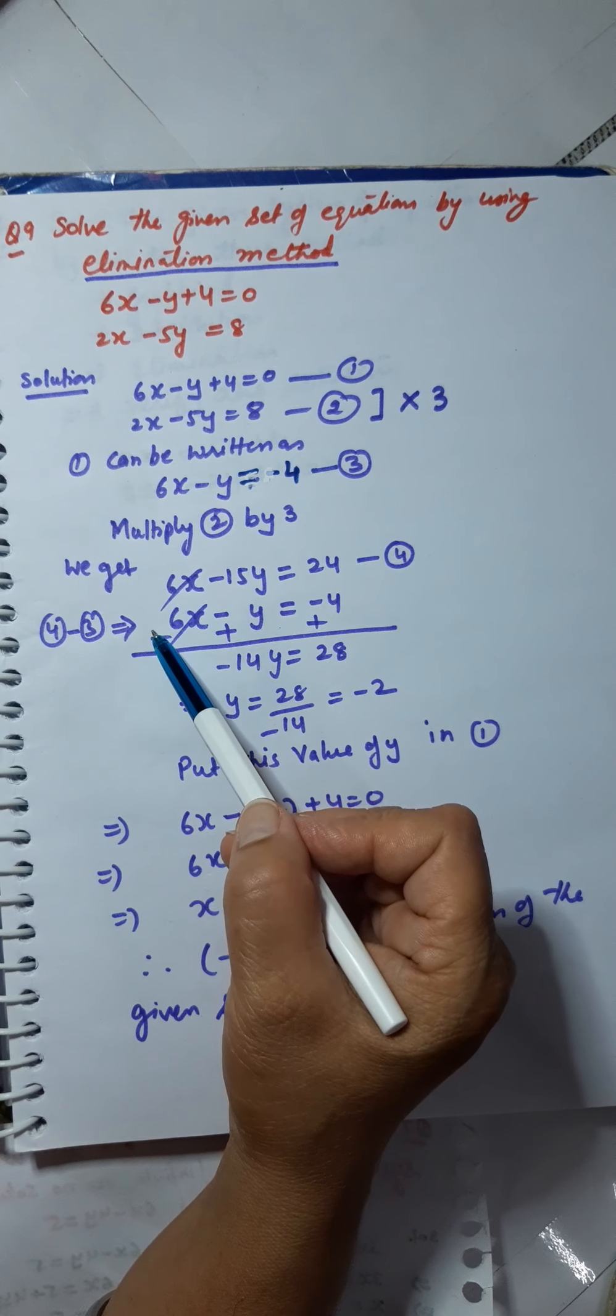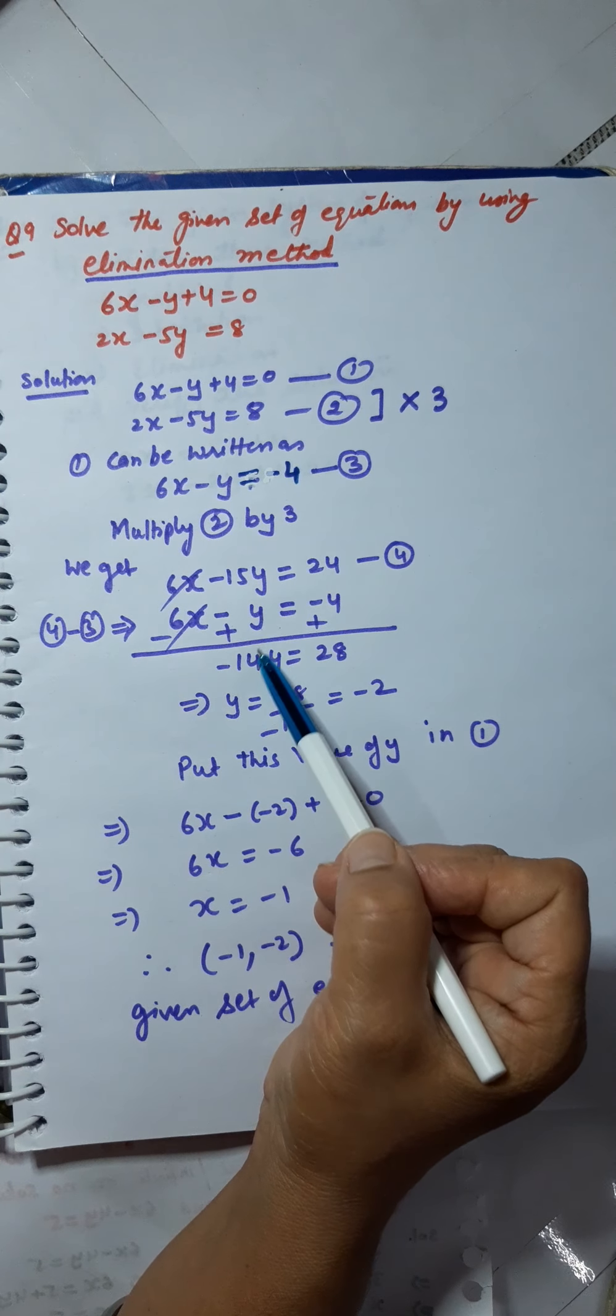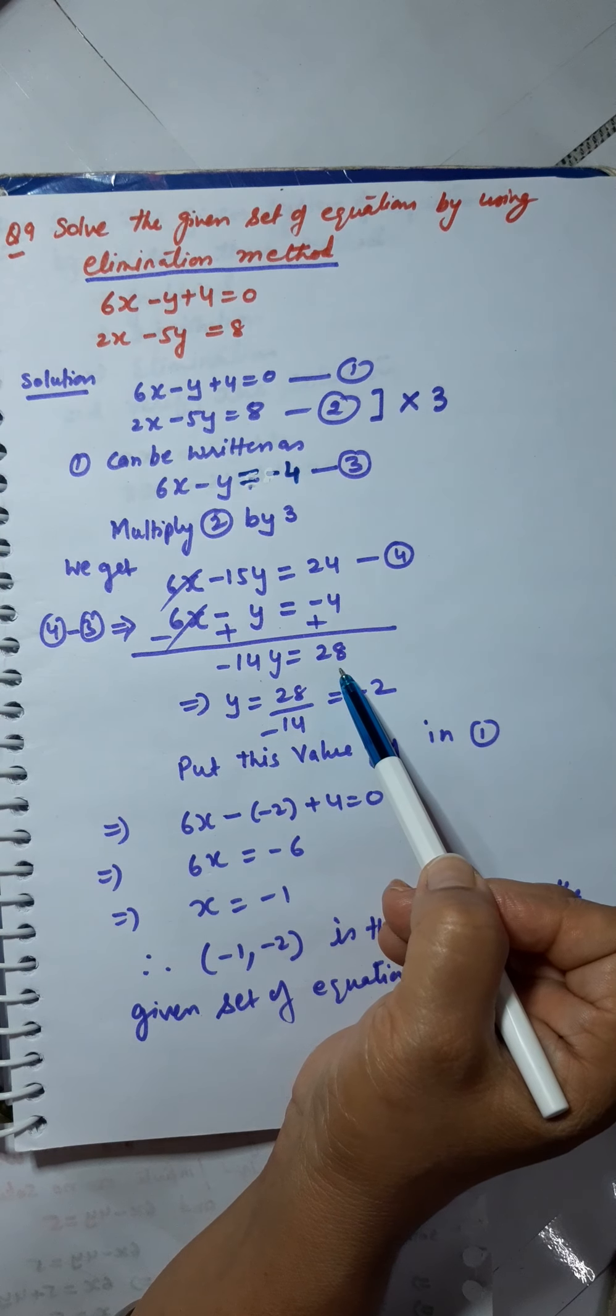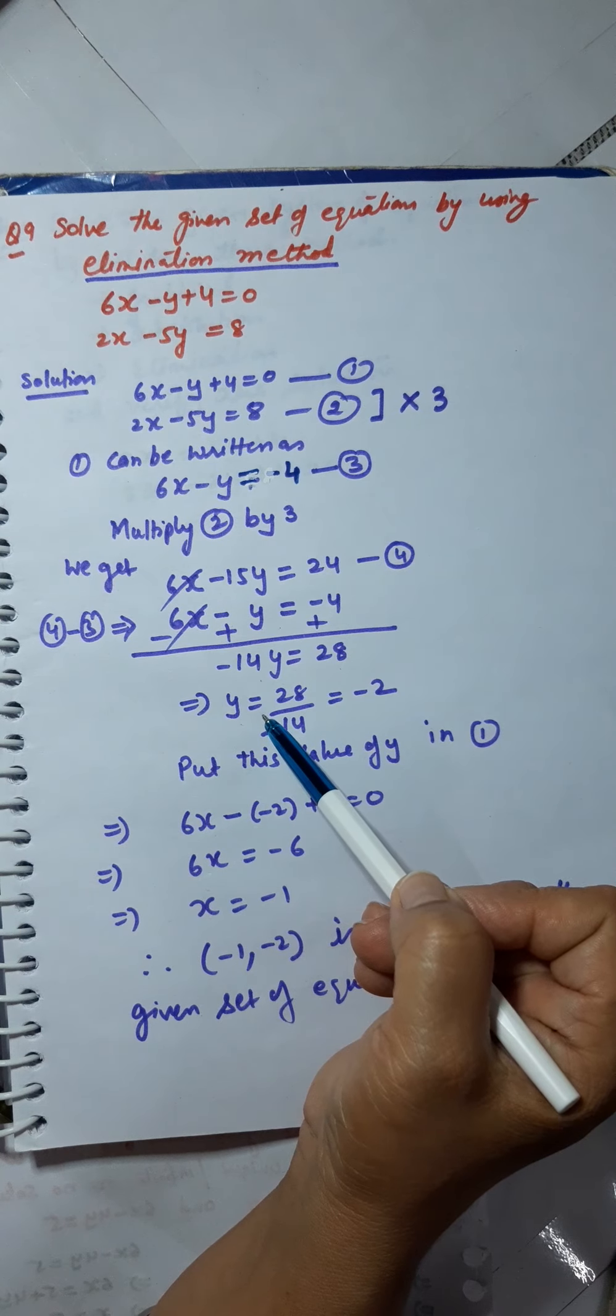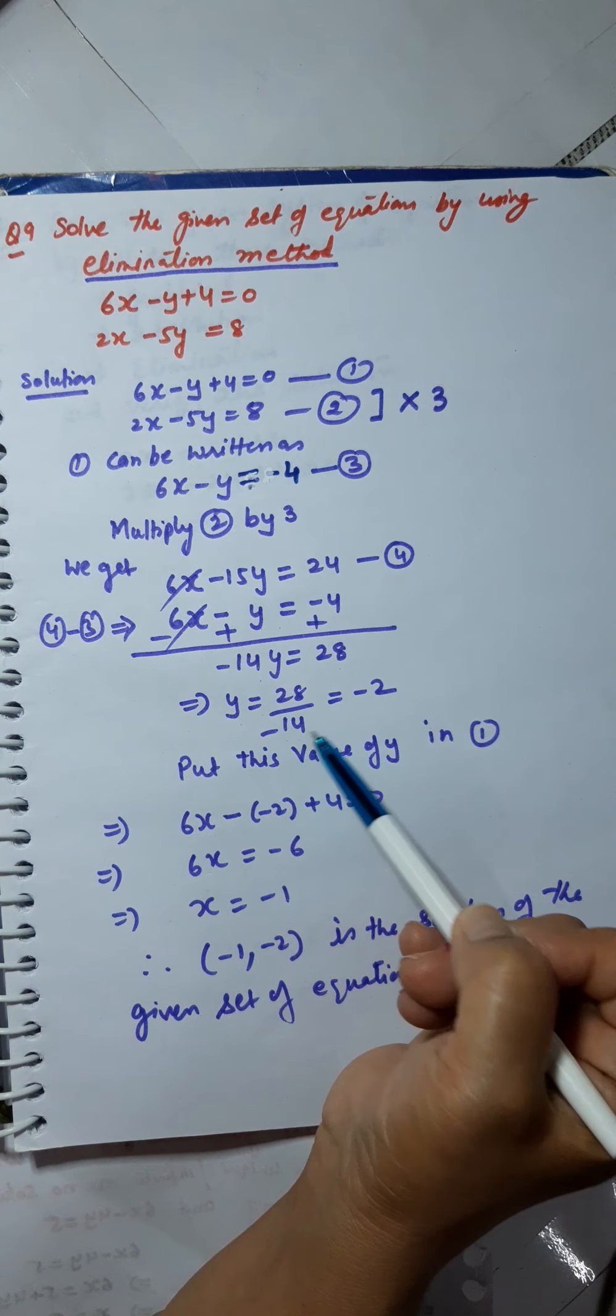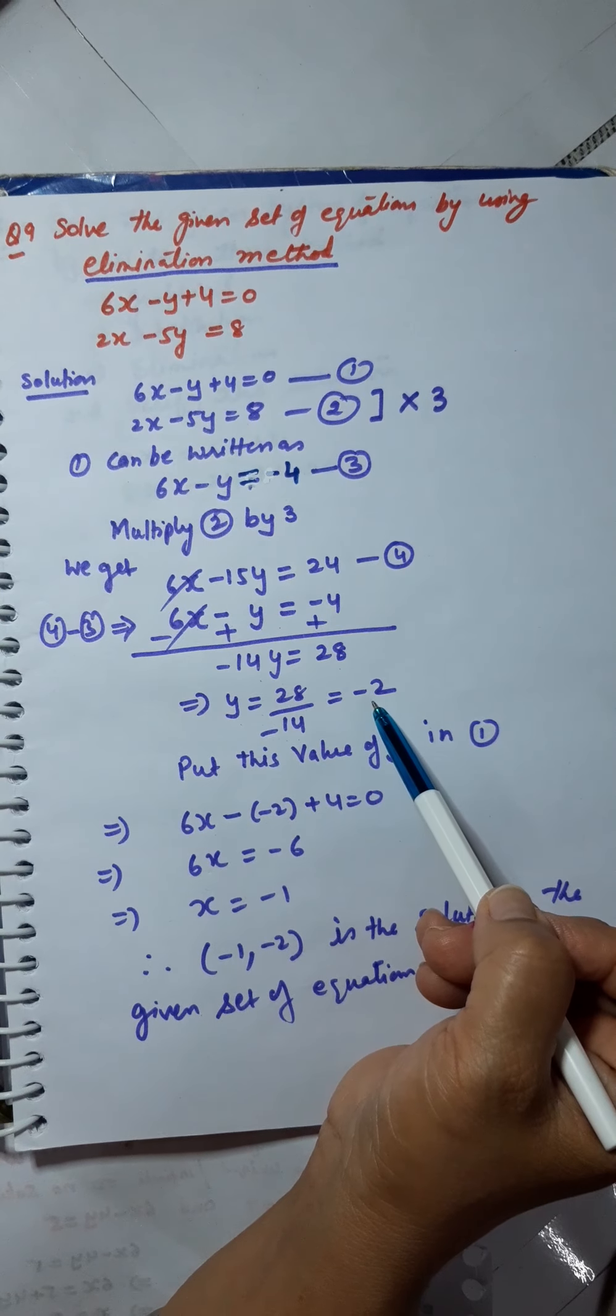And here, I will have minus 14y equals 28, which implies y equals 28 upon minus 14, which is equal to minus 2.